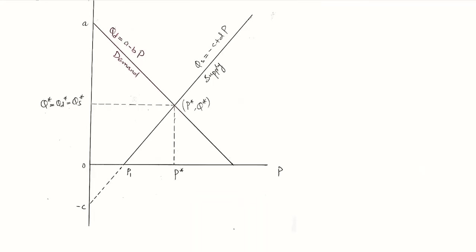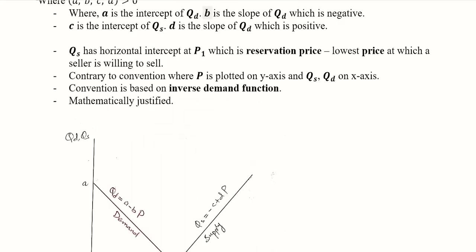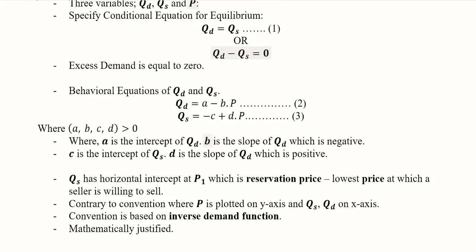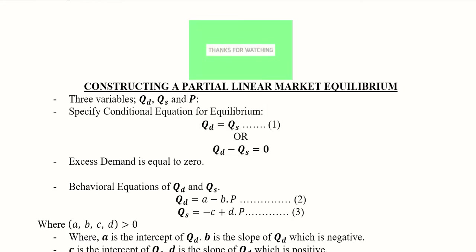So this was the solution for the equilibrium price and output, and this was the development of this market equilibrium model. This is how we complete the construction of the partial linear market model along with its solution values.